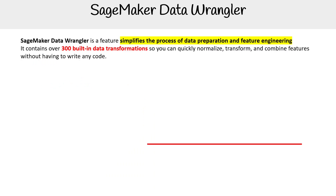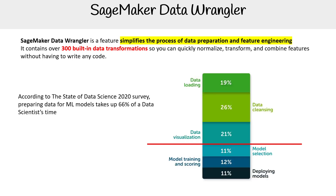Now let's talk about SageMaker Data Wrangler. This is a feature that simplifies the process of data preparation and feature engineering. It contains over 300 built-in data transformations, so you can quickly normalize, transform, and combine features without writing any code. According to the Data Science 2020 survey, preparing data for ML models takes up to 66% of a data scientist's time.